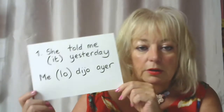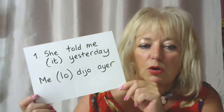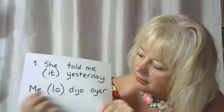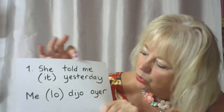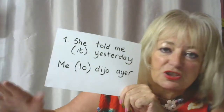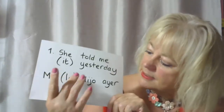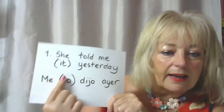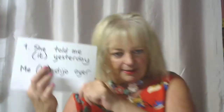Let's look at some examples. Vamos a mirar algunos ejemplos en inglés y español. Number one: She told me it yesterday. Me lo dijo ayer. Again, 'me lo' — Spanish pronouns come first. In English: she told me it yesterday. El 'it' es opcional, no es necesario decirlo. Puedes decir: she told me yesterday, como en español, me dijo ayer. El pronombre directo no es necesario en esta frase.